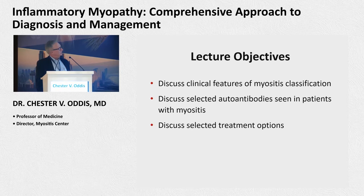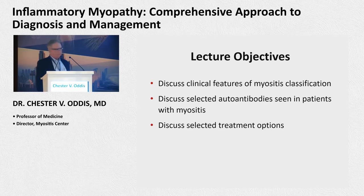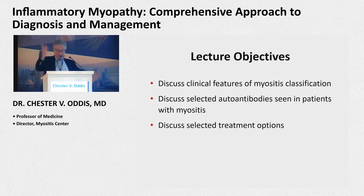I'm going to talk about clinical features in the new myositis classification, and I'm going to talk about autoantibodies — they're incredibly important in all of our diseases, very prognostically and clinically important. Then I'm going to sprinkle in treatment options, and I'll be happy to answer any questions that come up later outside of this half-hour.